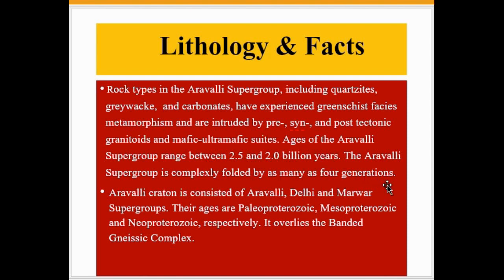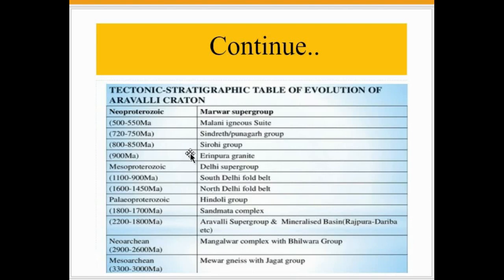The Aravalli Craton consists of the Aravalli, Delhi, and Marwar Supergroups, with ages of Paleoproterozoic, Mesoproterozoic, and Neoproterozoic respectively. It overlies the Banded Gneissic Complex. The tectonic evolution of the Aravalli Craton shows the Marwar Supergroup as the youngest, of Neoproterozoic age.